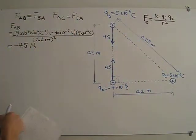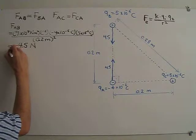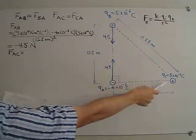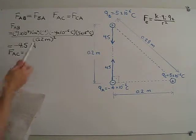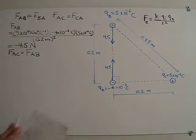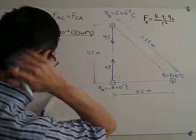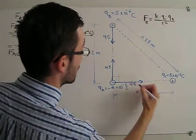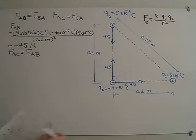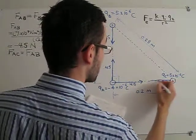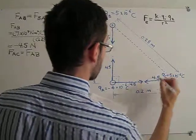So let us now calculate FAC. Because charges QB and QC are exactly the same — 5 times 10 to the negative 6 — FAC will be equal in magnitude to FAB. Of course the directions will be different. So FAC will be 4.5 Newtons, and similarly FCA will also be 4.5 Newtons.